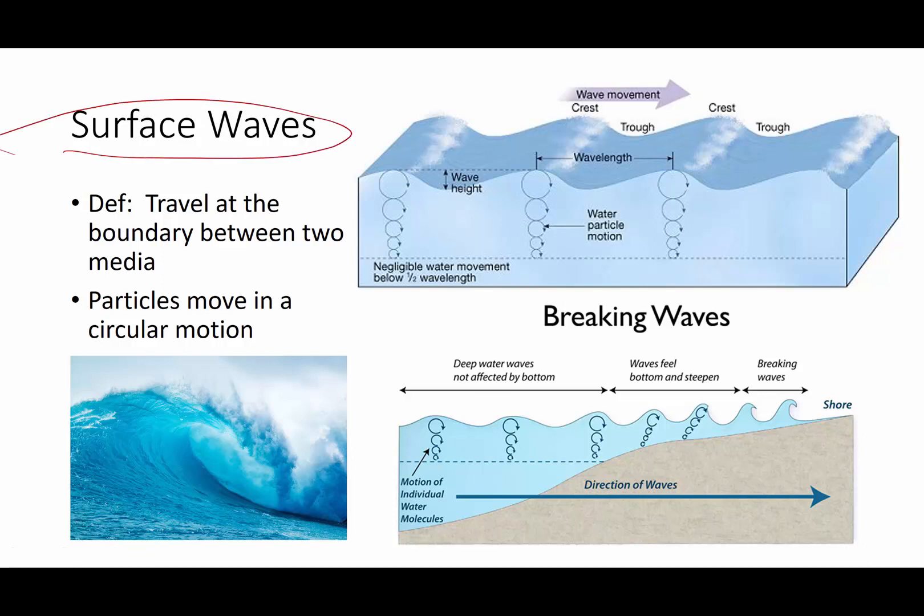Now, surface waves occur at the boundary between two materials, between two media. And the two media have to have different speeds so that the material will travel at one speed in one material and another speed in another. Where do you and I see this the most often? We see it most often in water waves. Surface waves do not travel terribly deep. This illustration says they're kind of negligible below about half one wavelength below the surface. And the actual path of a particle in a surface wave is circular.